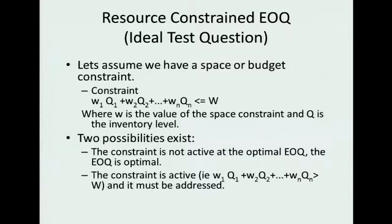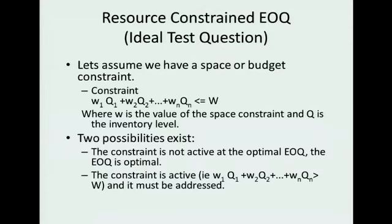Now one extension, and this is not an ideal test question, this won't be on the test, is let's consider you have a space constraint. So we only have so much space to put stuff, and we have different weights per items, and they have to be less than our total space. And what you can do is, not on the test, you can set up what they call a Lagrange multiplier and solve this. And this is mostly for the benefit of our graduate students. Basically you can add a constraint and solve an optimization problem and adjust the order quantities based on the weight.